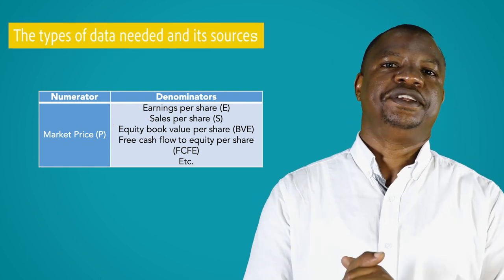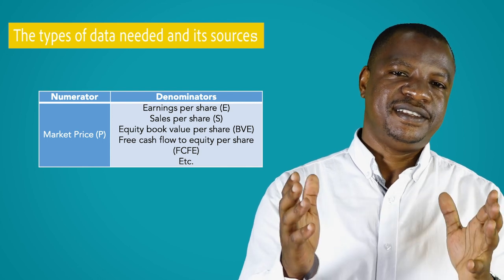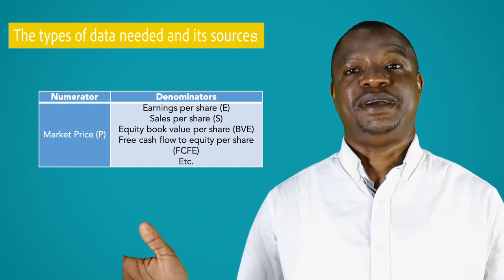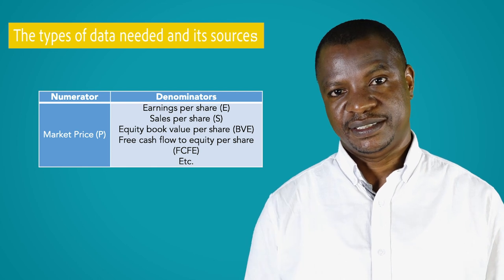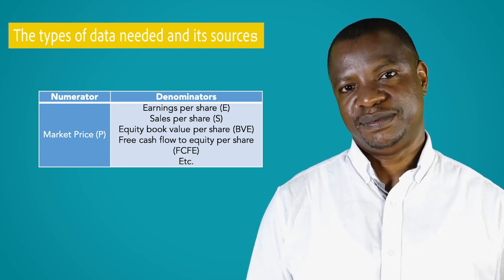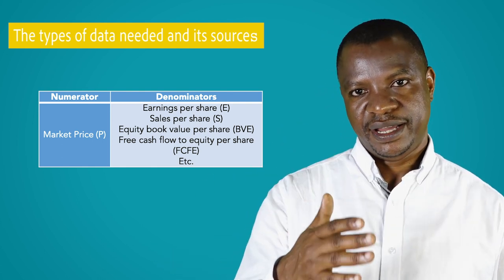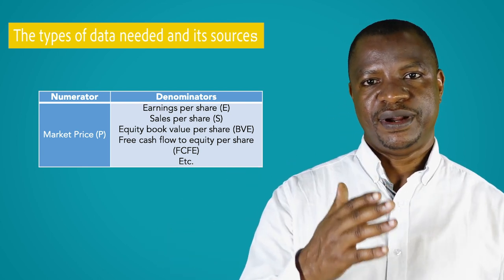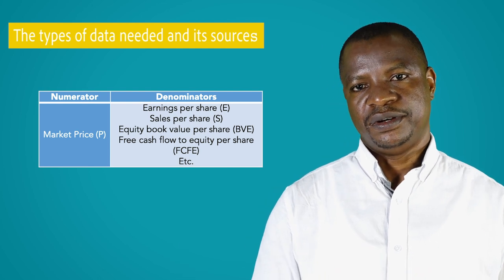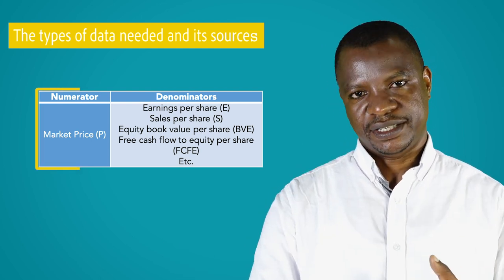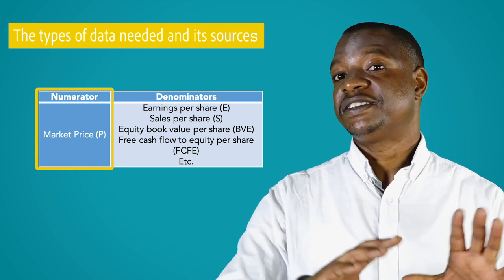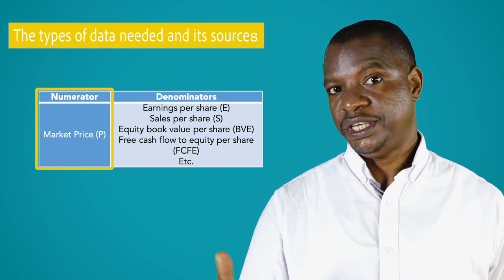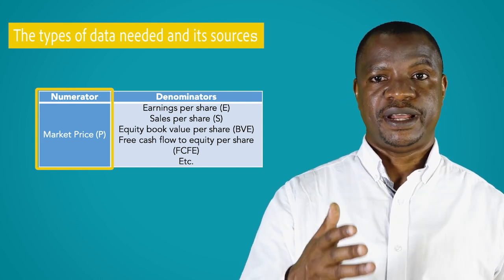What type of data do we need for this purpose? Since our objective is to value equity, we need to collect data relating to equity valuation multiples for all peer companies. We have common multiples such as price to earnings per share, price to sales per share, price to book value of equity per share, and price to free cash flow per share. The numerator is the same for all equity multiples — that is the most current share price. Therefore, equity multiples are also called price multiples.